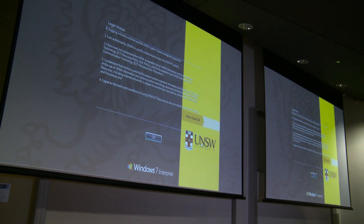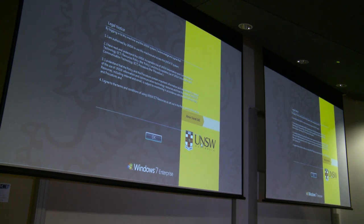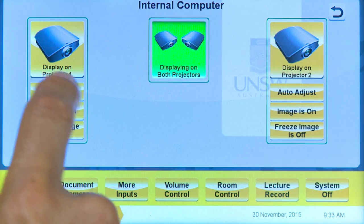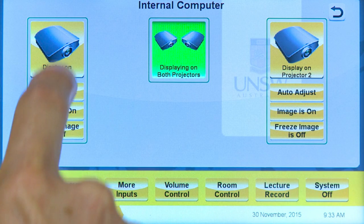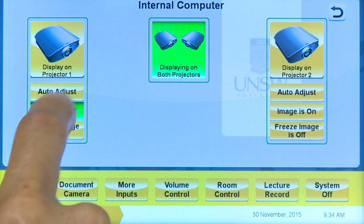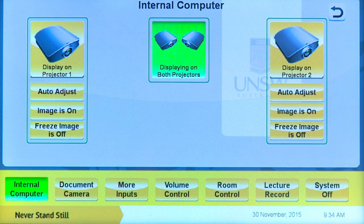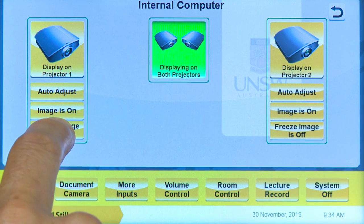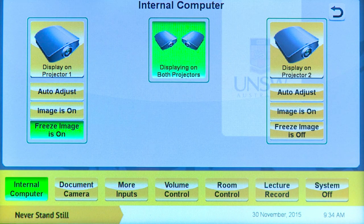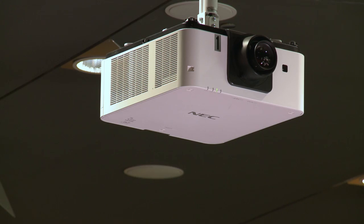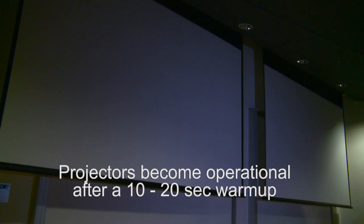In dual projection rooms, your selected video input can be displayed on projector one, two, or both. You can also adjust the size, toggle on or off, and freeze the image by selecting the relevant buttons on this page. Pressing the projector icon will automatically turn on the projector and lower the relevant screen.